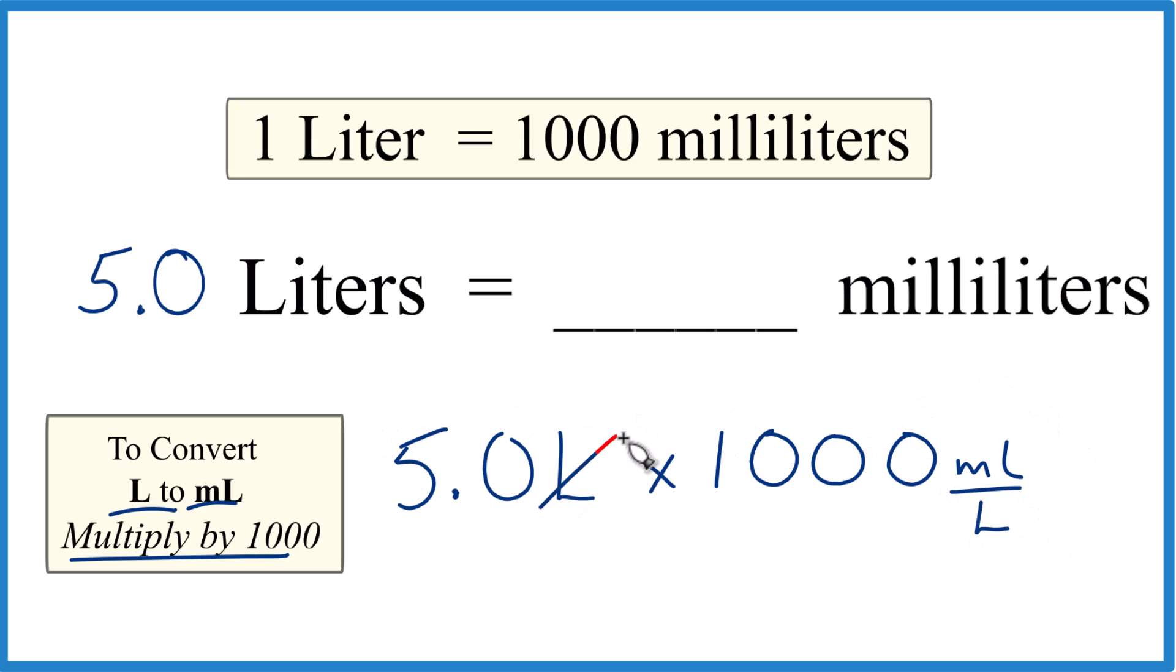When we multiply, we have liters on top and the bottom. They cancel out. We're left with milliliters, and that's what we're looking for.